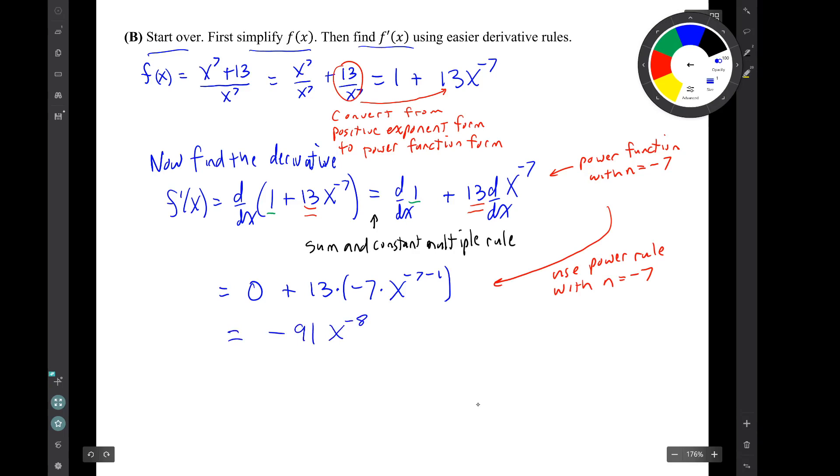So there's our result in power function form. Let's convert it to positive exponent form. So we get minus 91 over x^8. Notice that when I dealt with the negative exponent, the negative exponent is only attached to that x. It's not attached to the 91. So the 91 stays up top and the x goes down to the bottom.